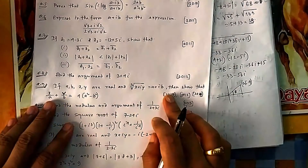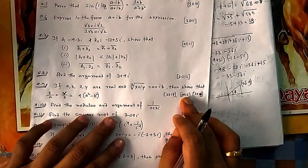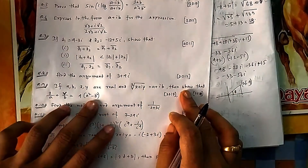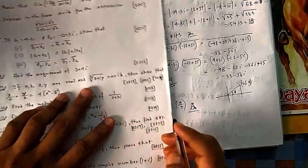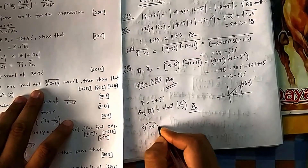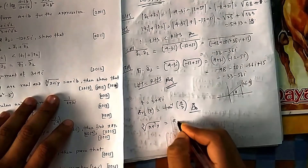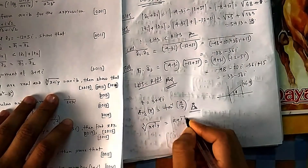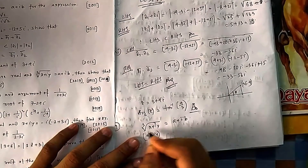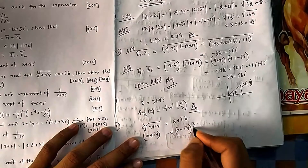Question 9 has appeared three times in exams — 2012, 2014, and 2017. You need to show a given identity. This comes from the basic property of equality of complex numbers: two complex numbers are equal only if their real parts are equal and their imaginary parts are equal. Take the cube of both sides.